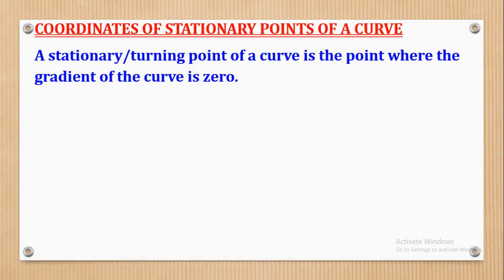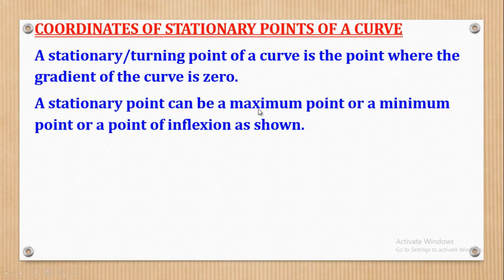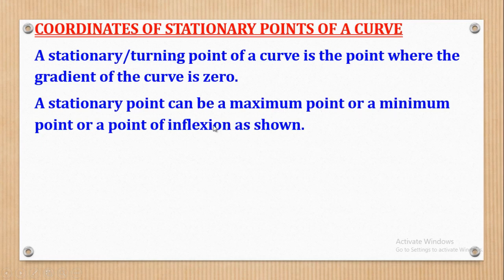Stationary Points are also known as Turning Points of a Curve, and it's a point where the gradient of the tangent is zero. A Stationary Point can be a Maximum Point, a Minimum Point, or a Point of Inflection. The word Stationary Point is a general word to mean either Maximum, Minimum, or Point of Inflection.